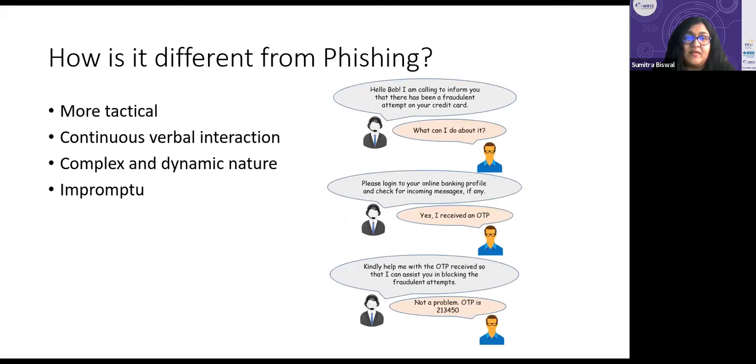Here I have a small example of vishing where you can see there is this attacker who is posing himself as someone very friendly and is here to help Bob, who is the target, in helping him to prevent any kind of fraudulent attack on the credit card. As the conversation goes on in a very friendly manner, Bob is tricked into revealing his OTP.